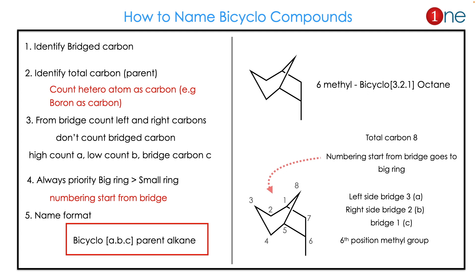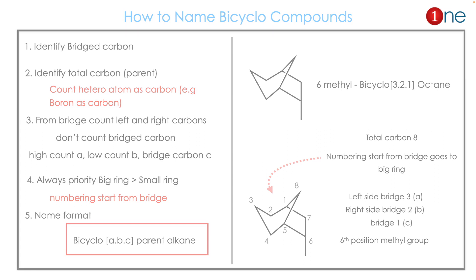Here I have given a compound which is a bicyclic compound with one bridge — one side has three carbons, another side has two carbons. If you name it, the numbering starts from the bigger chain, so you end up with 6-methylbicyclo[3.2.1]octane.